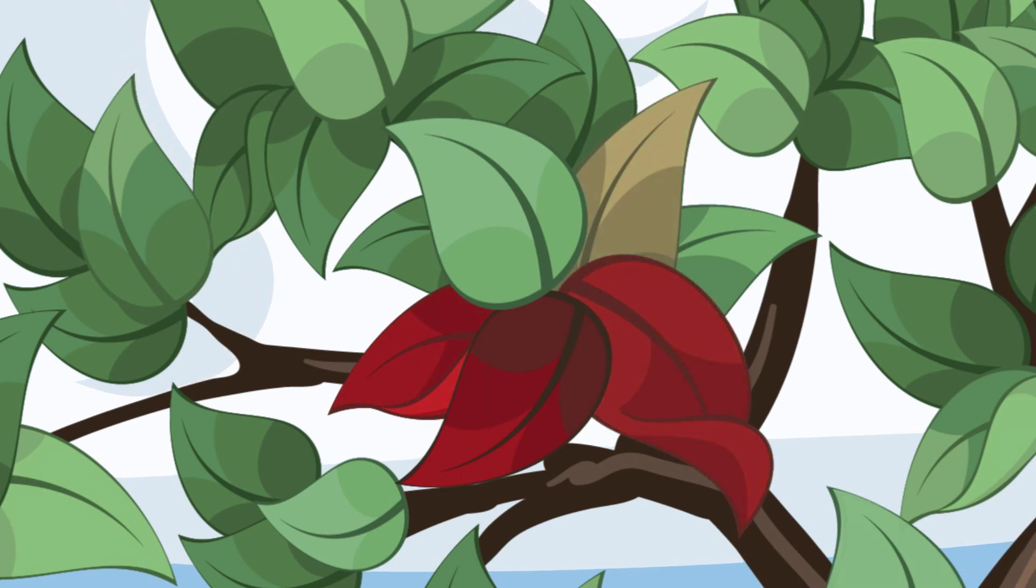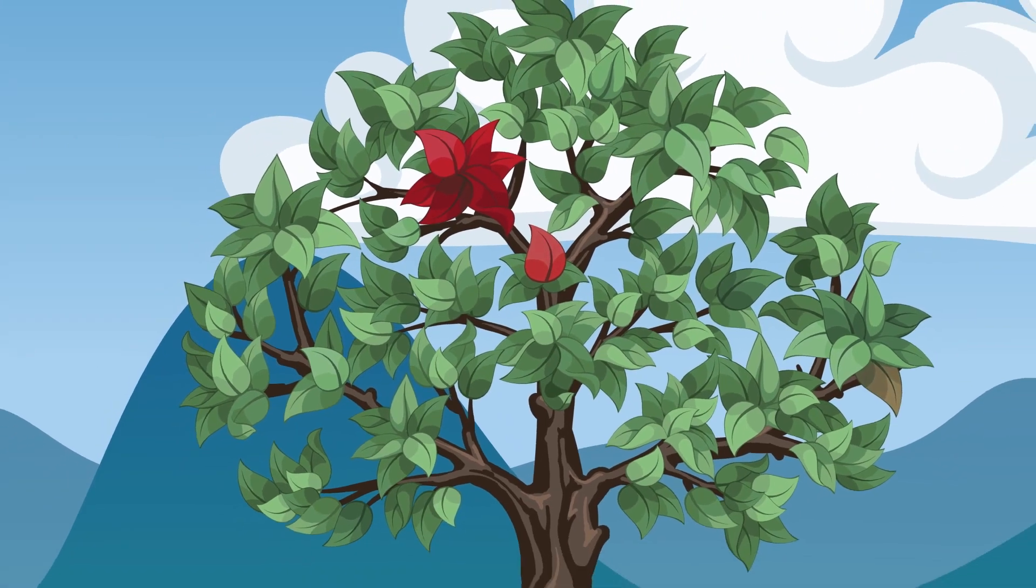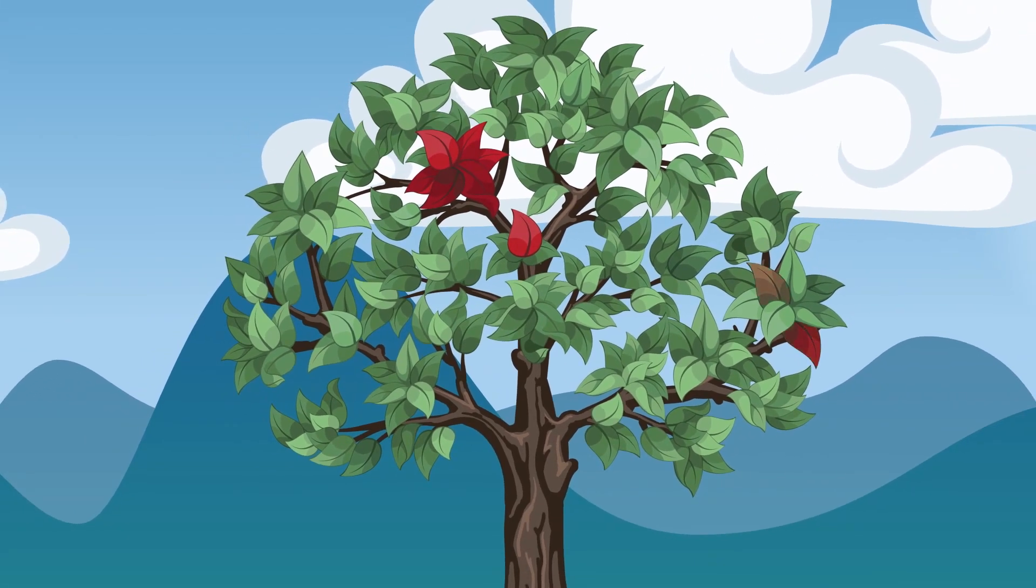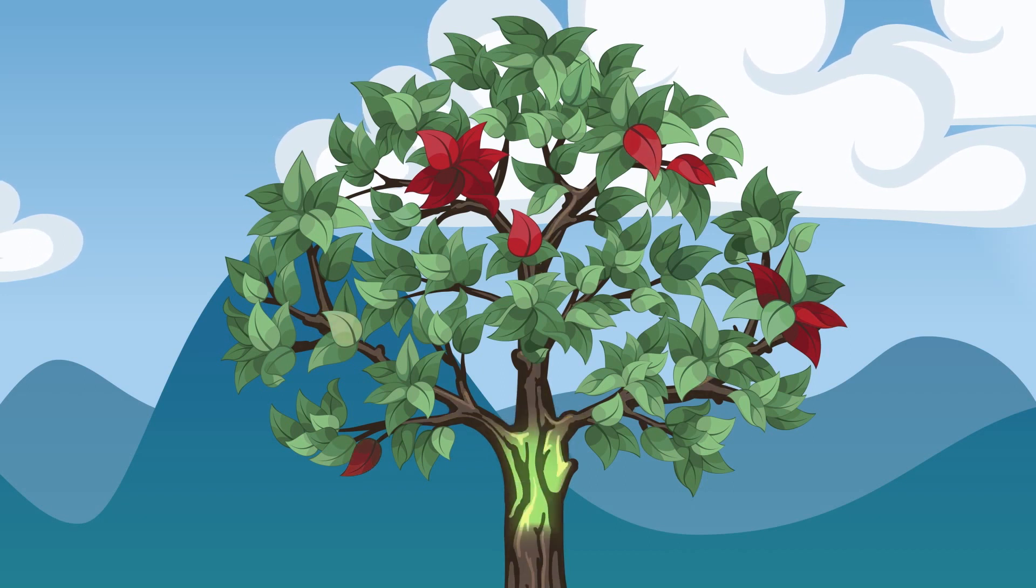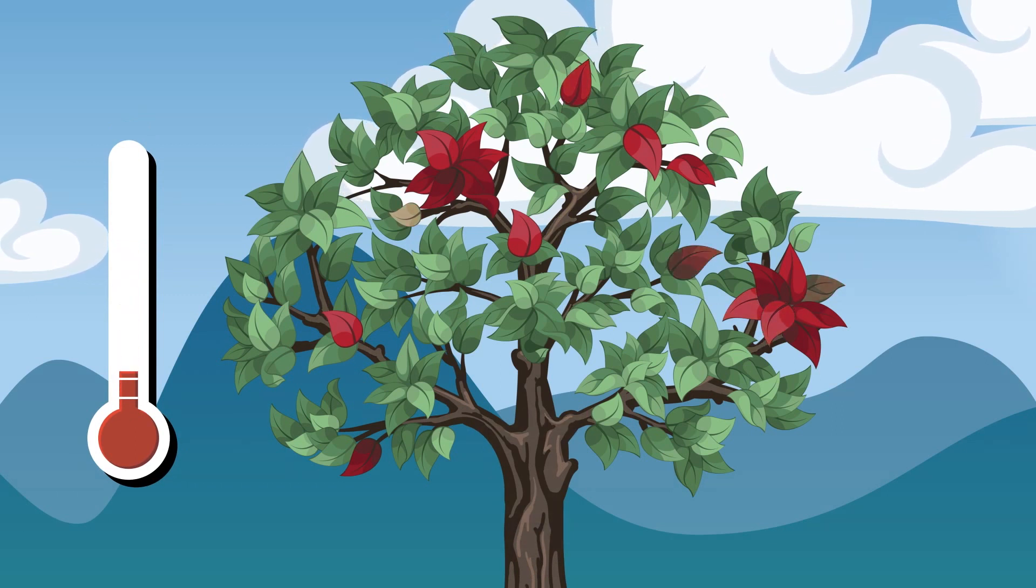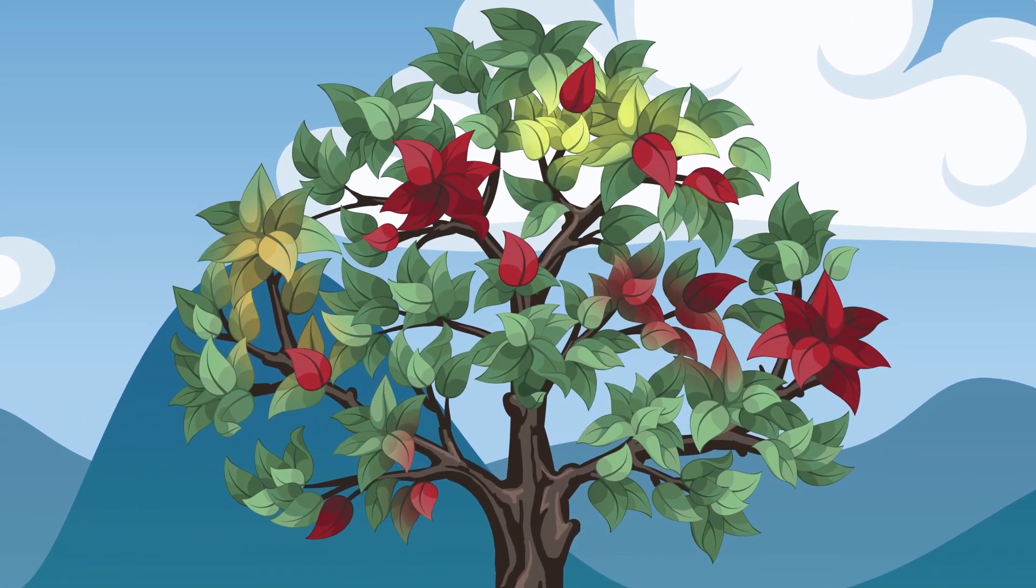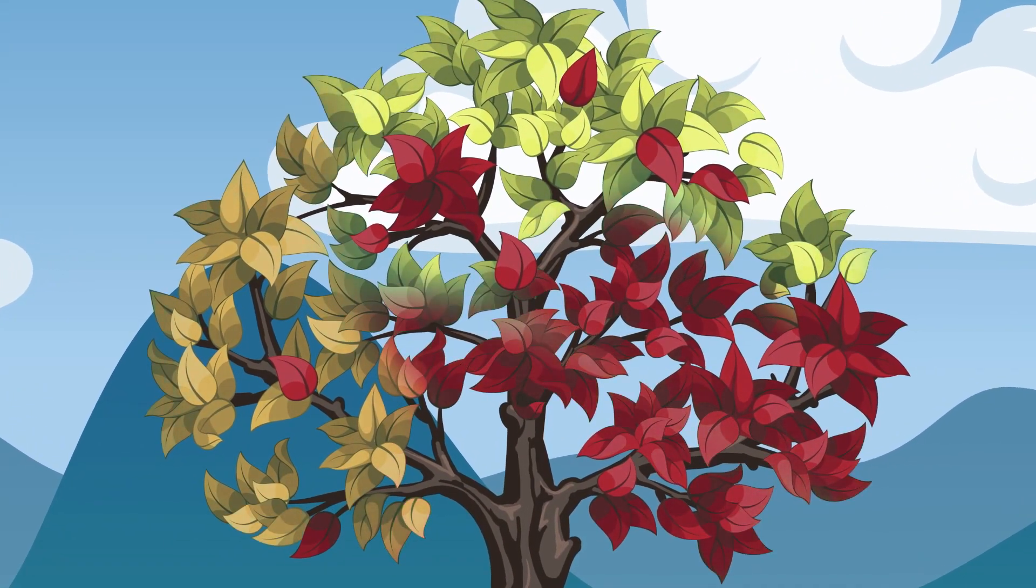So trees spring into action before that happens and start getting prepared early once the air first starts to cool down. They take all of the nutrients that are left in their leaves and start to recycle it back into the branches, trunk, and roots to help the tree survive during the colder months when it can't eat anymore.